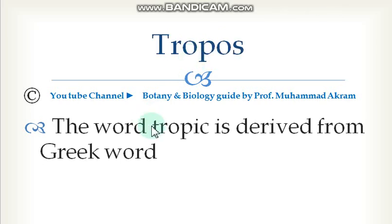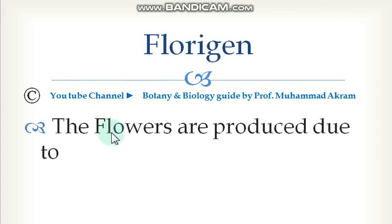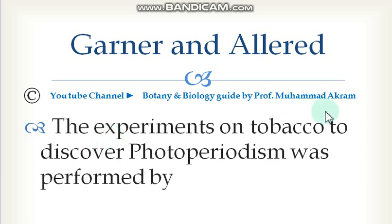The word 'tropic' is derived from the Greek word tropos. Tropic refers to movement in plants. The flowers are produced due to florigen. The experiments on tobacco plants to discover photoperiodism were performed by Garner and Allard — these two scientists performed experiments on tobacco to discover photoperiodism.